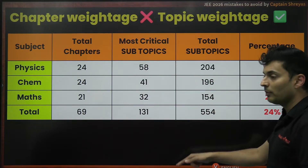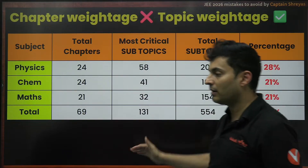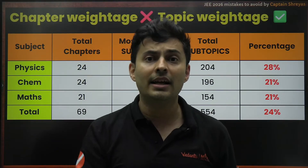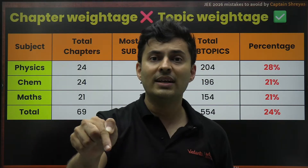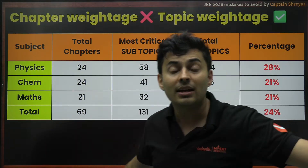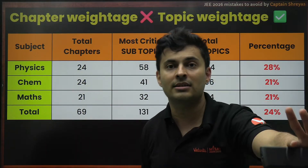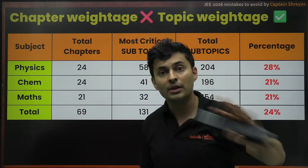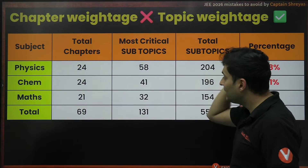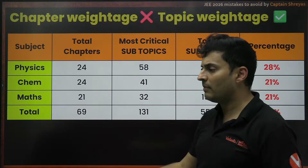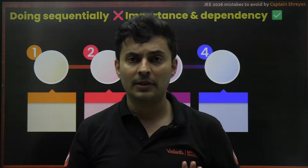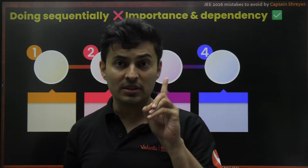With one fourth of the syllabus — roughly 24% — you are getting 99 percentile. This is what people miss, and this is the biggest mistake. What are those subtopics? I'll make a separate video. Please like this video right now if you want it, because nobody in India has done this analysis. If you want the entire subtopic list, please comment and like this video. This was the first mistake.